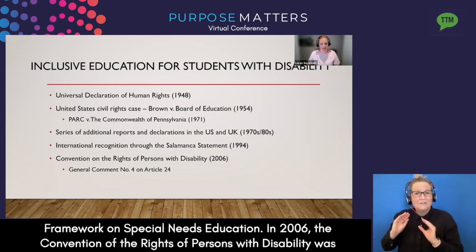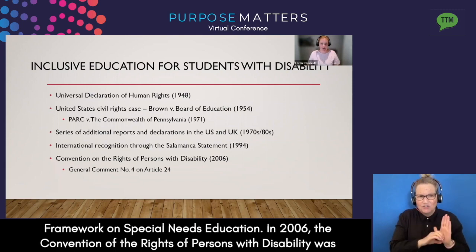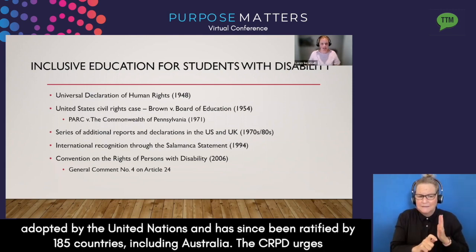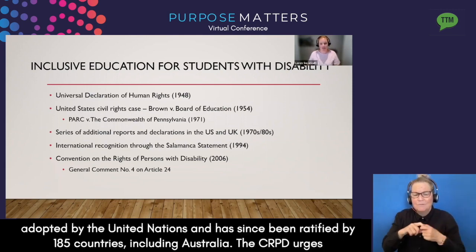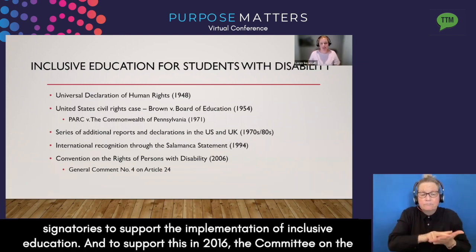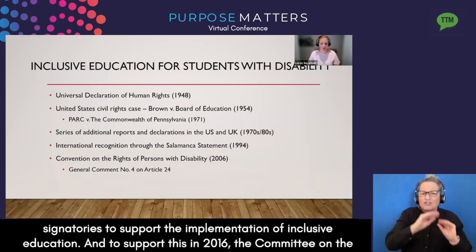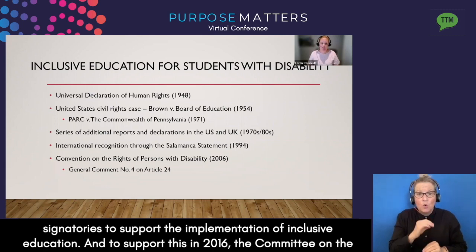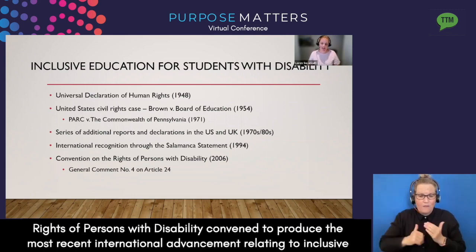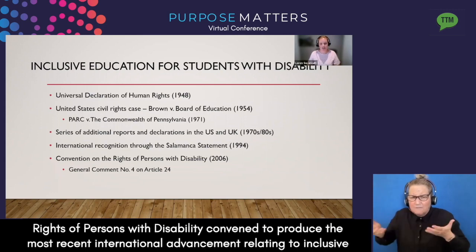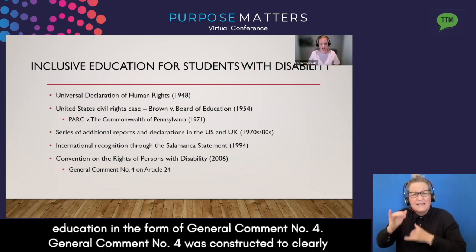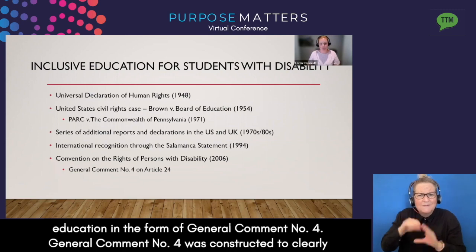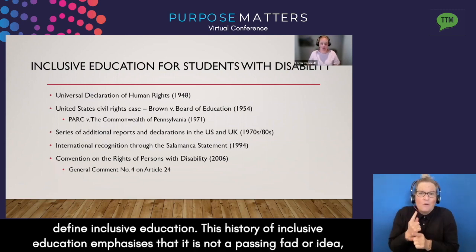In 2006, the Convention on the Rights of Persons with Disability was adopted by the United Nations and has since been ratified by 185 countries, including Australia. The CRPD urges signatories to support the implementation of inclusive education, and to support this, in 2016, the Committee on the Rights of Persons with Disability convened to produce the most recent international advancement relating to inclusive education in the form of General Comment Number Four, which was constructed to clearly define inclusive education.